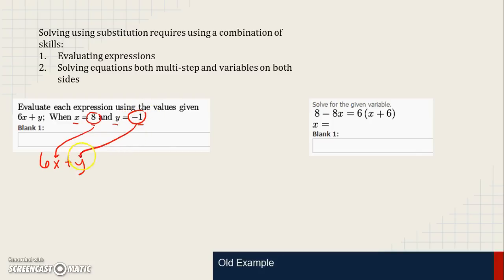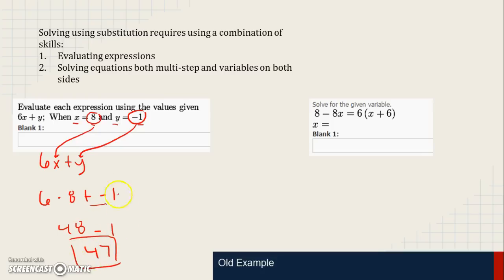We also took what y equaled, which is negative 1, and substituted it in for where y was in the expression. So we have 6 times 8, then replace y with negative 1. Simplifying using order of operations: 6 times 8 is 48, plus a negative is just minus 1, and 48 minus 1 is 47. The key takeaway is understanding how to substitute a value in for a variable.